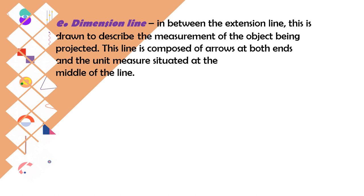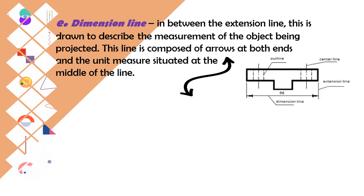Next is the dimension line. The dimension line is drawn in between the extension lines and describes the measurement of the object being projected. This line is composed of arrows at both ends and the unit of measure is situated at the middle of the line. As you can notice, there are arrows at both ends. For example, if there is a measurement of 96 inches or 96 feet written on the line, it means that the measurement from one end to the other is 96 inches or 96 feet.